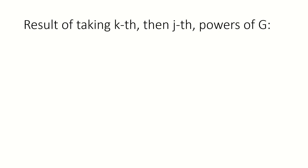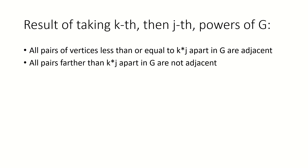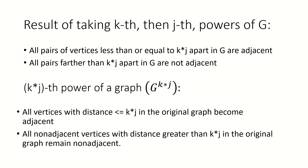Therefore, if we take the kth power and then the jth power of a graph, what we get is a graph where all pairs of vertices that were less than or equal to kj apart in the original graph are adjacent, and all pairs that were more than kj apart remain non-adjacent. Those are exactly the same adjacencies as found in a kjth power of the original graph. Therefore, the two graphs are equal.